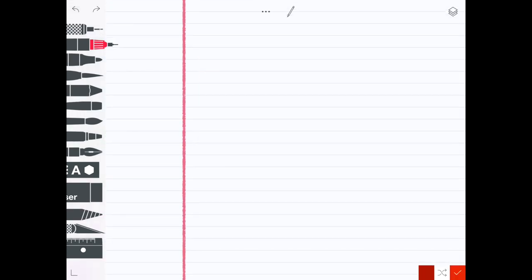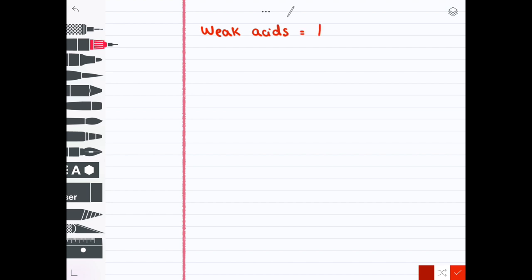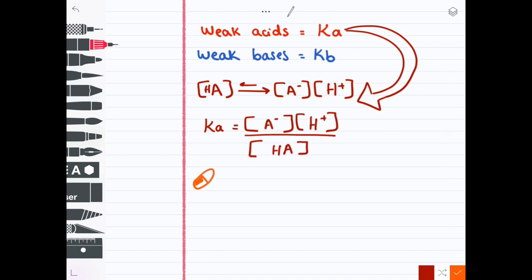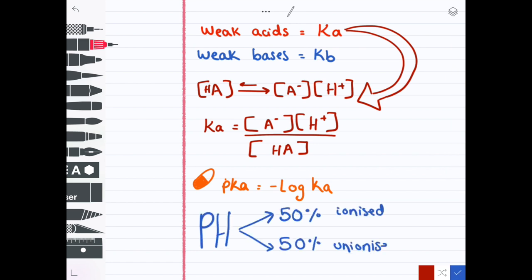In terms of weak acids and bases, they have dissociation constants which are expressed as Ka and Kb, respectively. Mathematically, Ka equals the sum of the concentration of the product over the reactant. pKa is used when talking about drugs. It equals minus the log of Ka and it's the pH at which 50% of the drug is ionized and 50% is unionized.